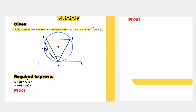The second thing to prove is that angle ABS — this one here — is equal to angle AQB. So those are the two things they want us to prove.